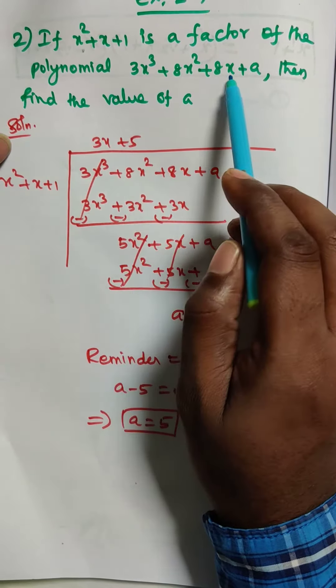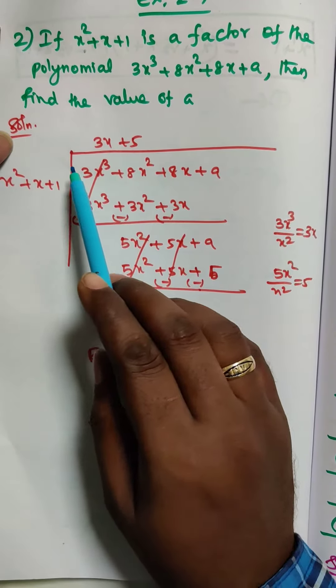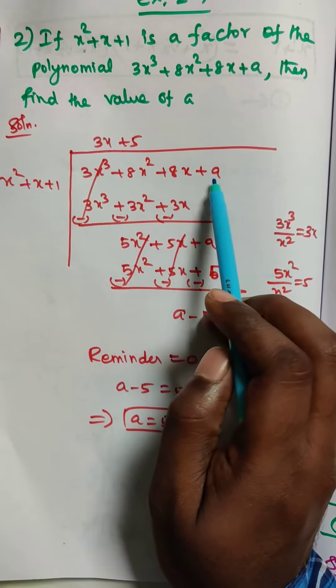So this is the polynomial equation. x² + x + 1 is a factor, so now we have to use the long division method. So 3x³ + 8x² + 8x + a.